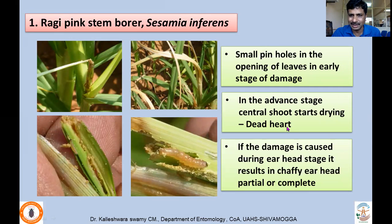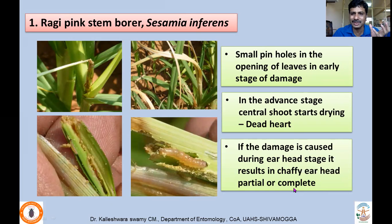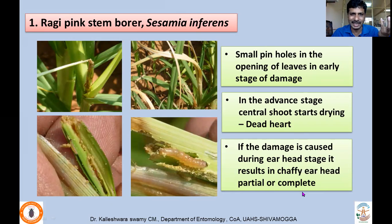Typically we find the dead heart symptom, where the central shoot dries up — a very characteristic damage. As the larva feeds on the inner content of the shoots, the dead heart occurs. If damage occurs at a later stage of the crop, we find chaffy ears, and if it occurs still later, incomplete filling of grains may occur. That is the typical damage caused by pink stem borer Sesamia inferens.